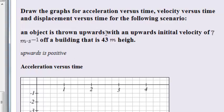An object is thrown upwards with an upwards initial velocity of seven meters per second off a building that is 43 meters high.